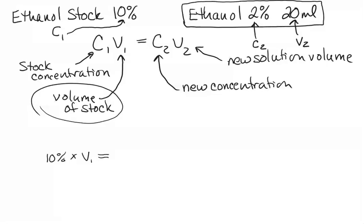And the product of that has to equal C2, which is the concentration of our new solution, 2%, multiplied by V2, which is the volume that we want to make of our new solution.